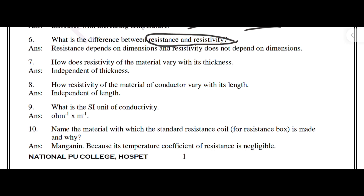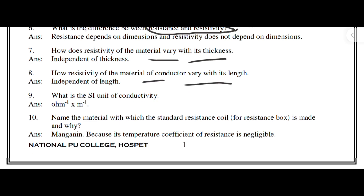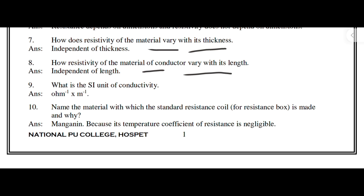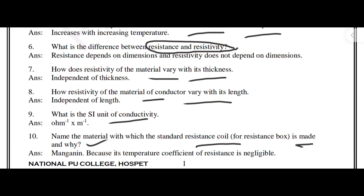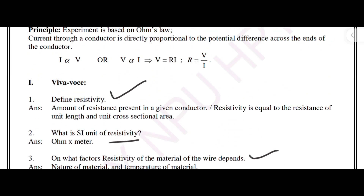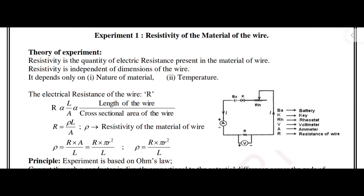How does resistivity of the material vary with its thickness? How does resistivity of the material of a conductor vary with length? What is the SI unit of conductivity? Name the material with which the standard resistance of a coil is made and why. These are the possible VIVA questions on the experiment of resistivity of the material of the wire.